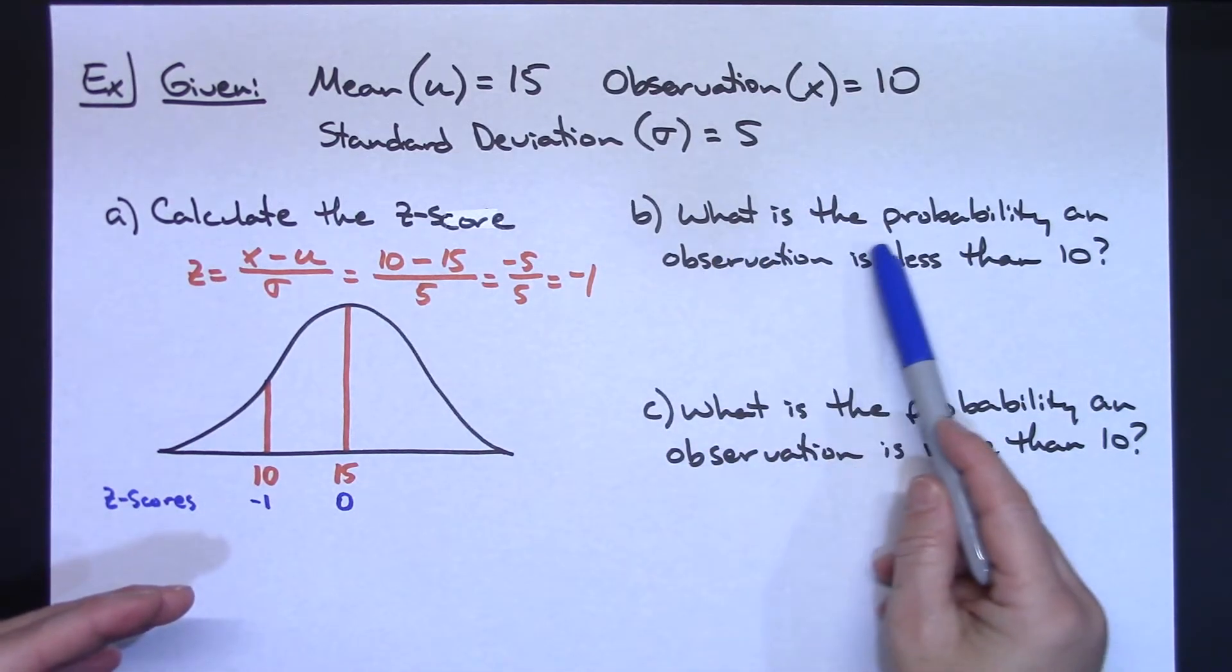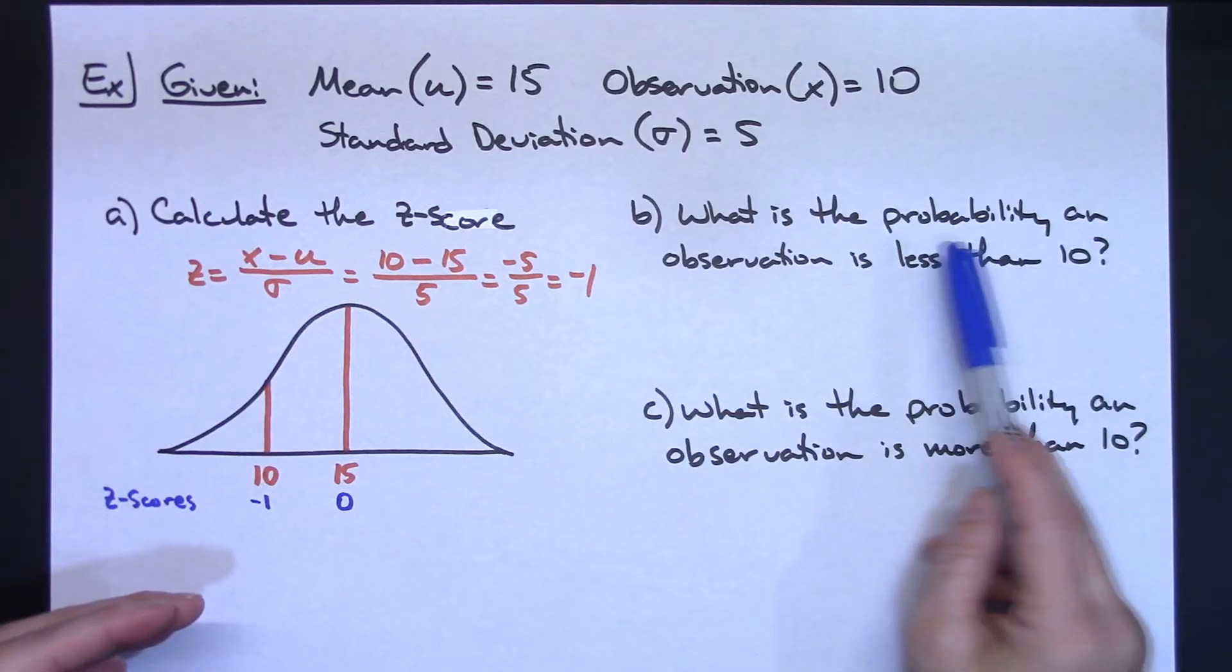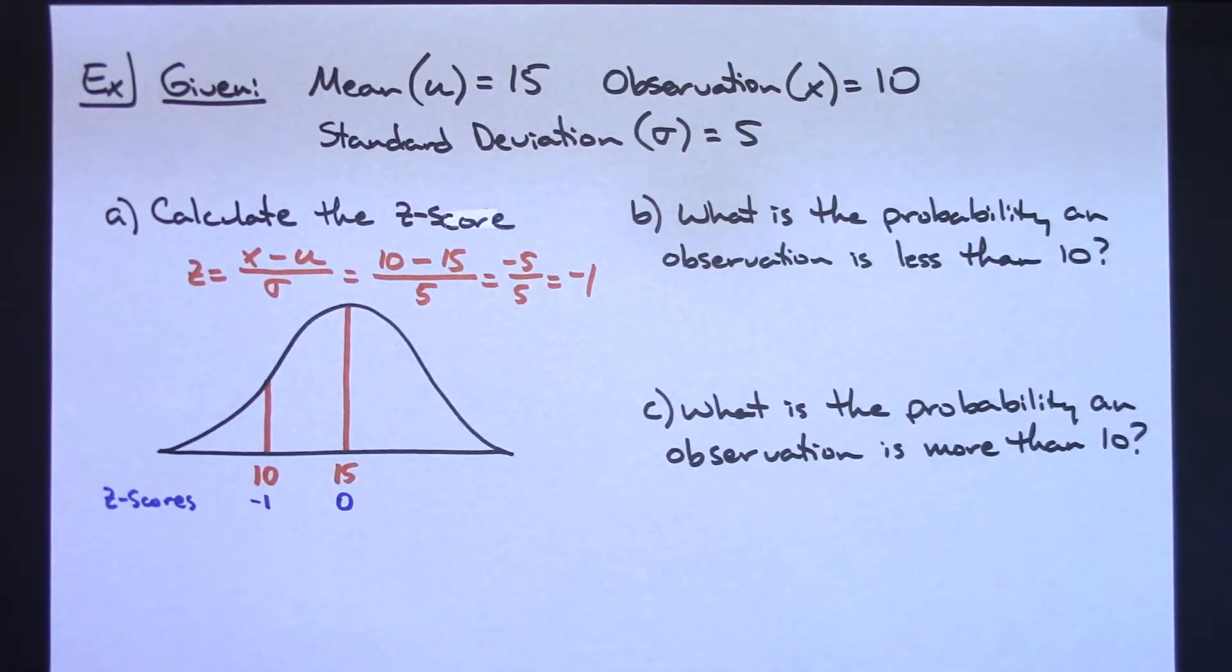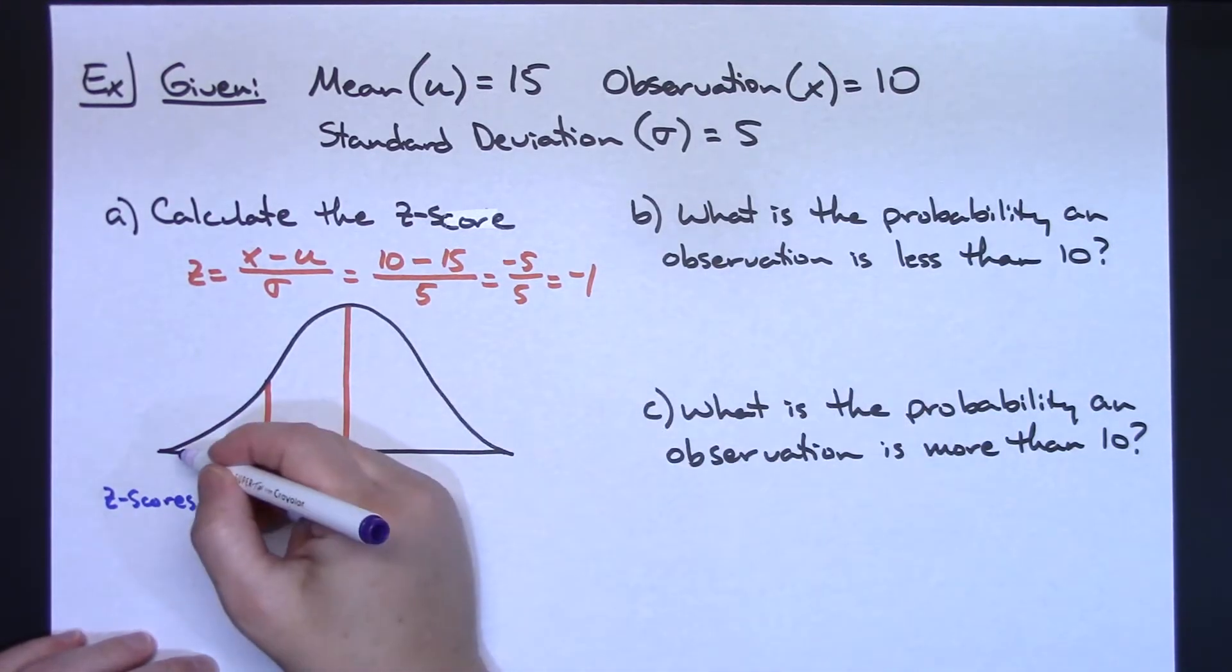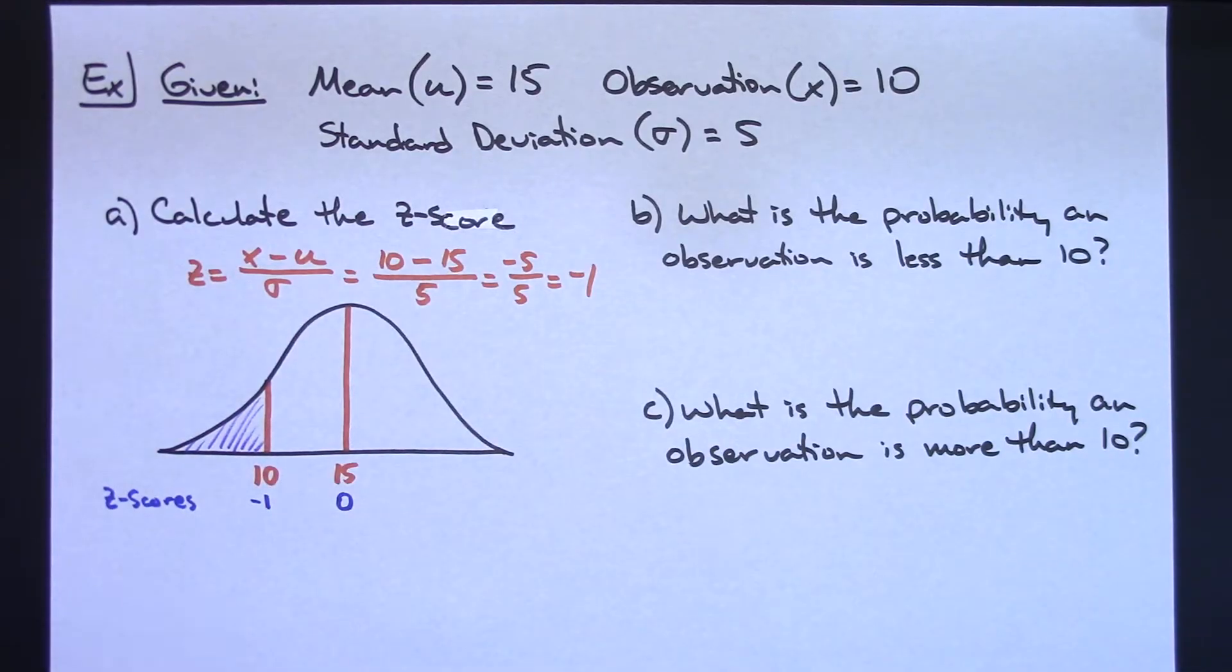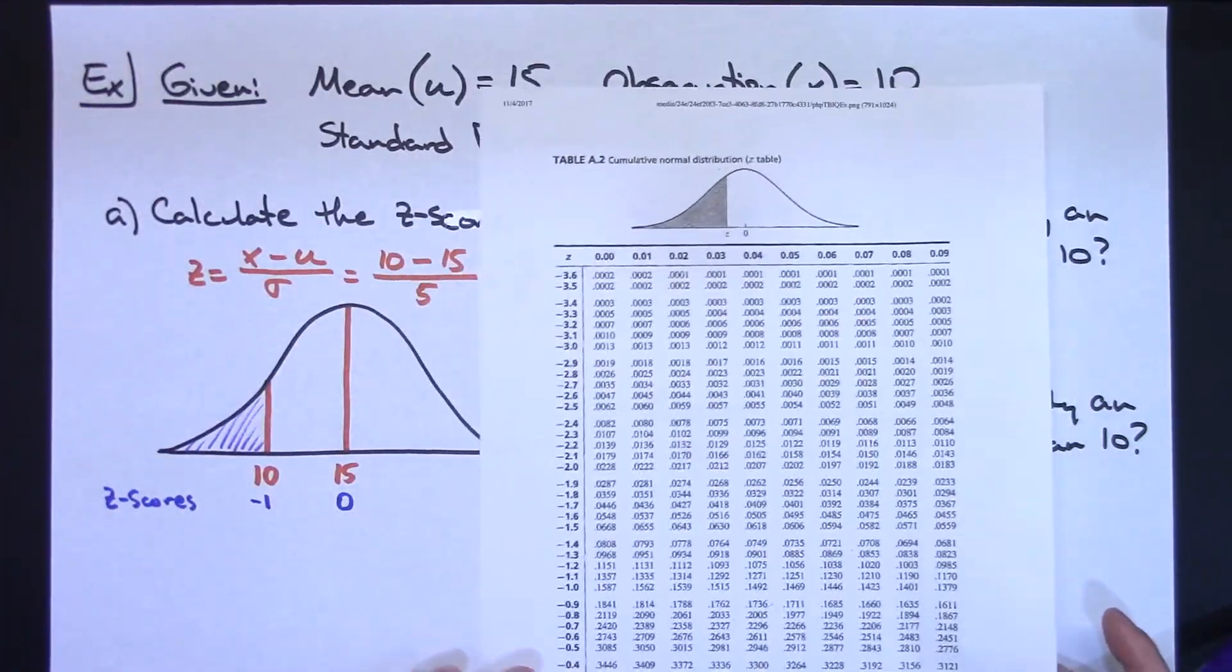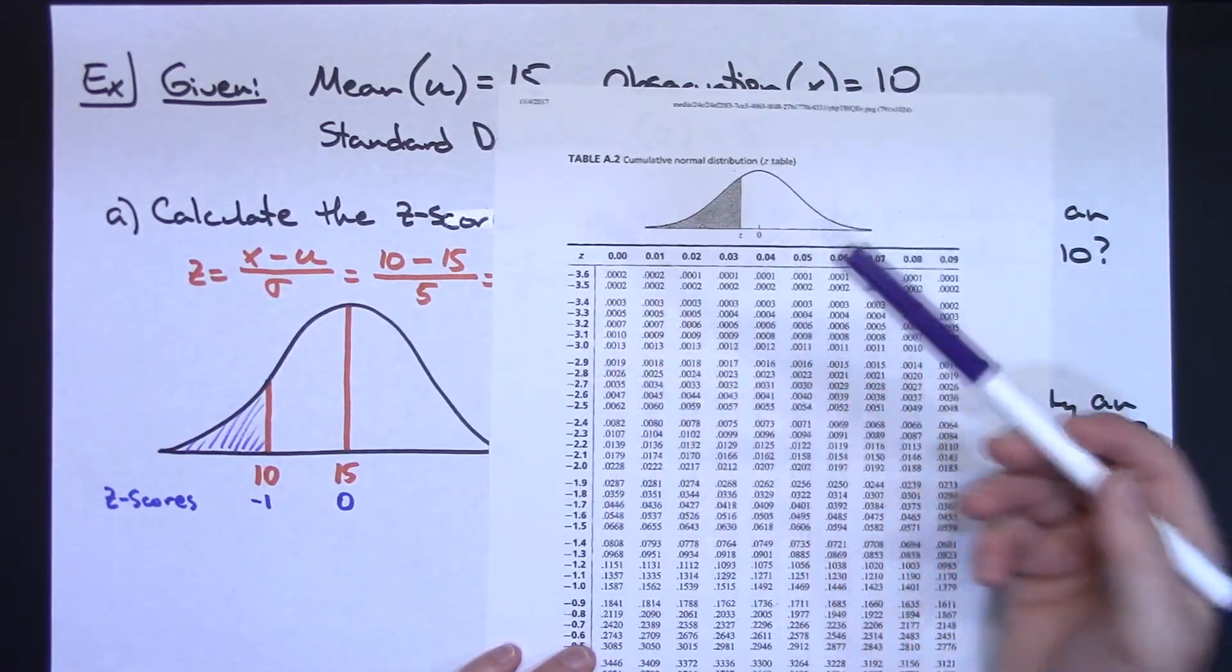Now there's what's going on in my picture right here. Now what is the probability an observation is less than 10? What's the probability that our observation is less than 10? I'm wanting to know what the probability is from right there, less than 10. What's the probability of an observation occurring less than 10? So now you're going to go to your tables.